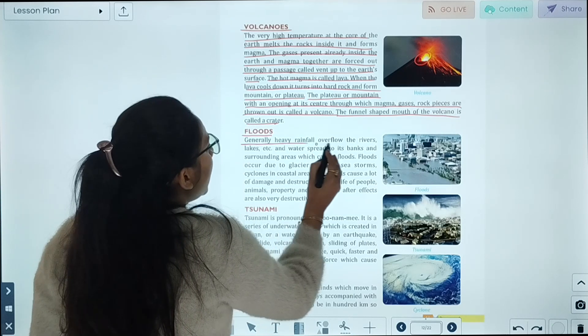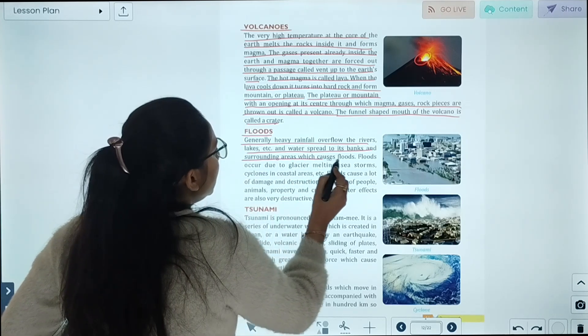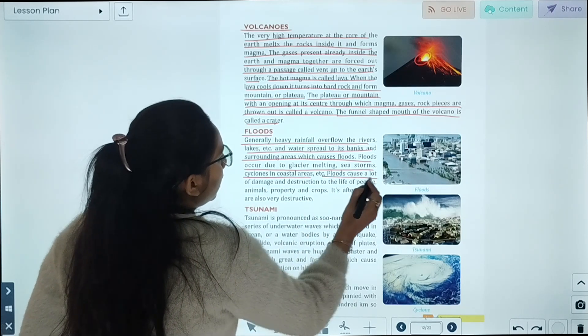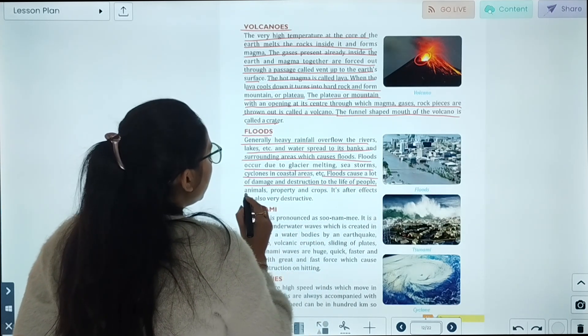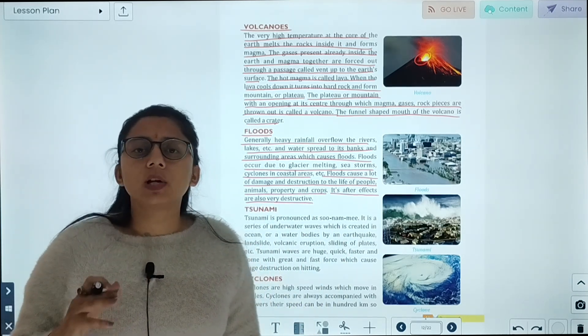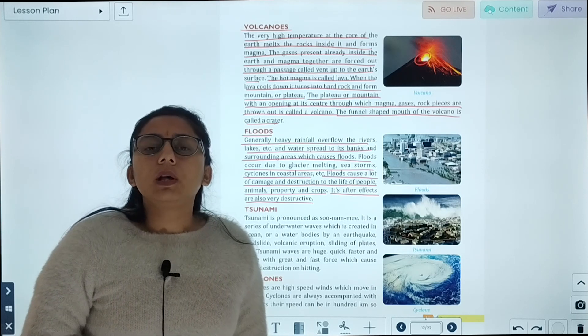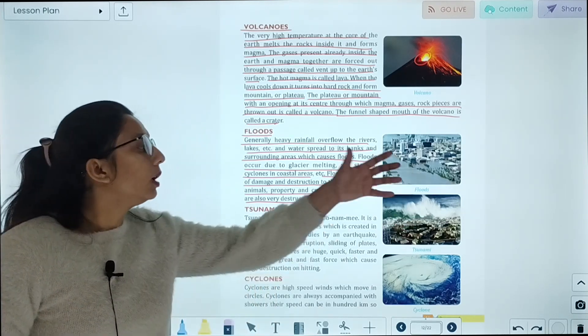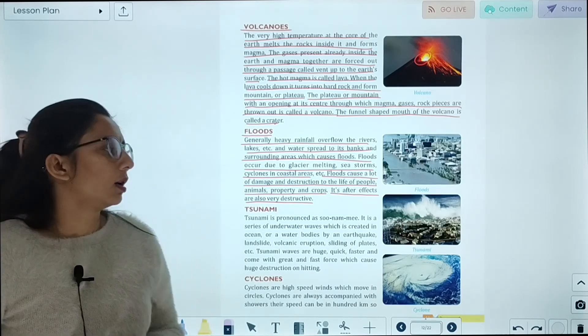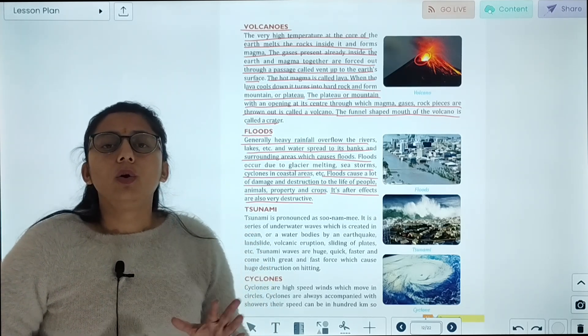Floods. Generally heavy rainfall overflows the rivers, lakes, and water spreads to its banks in the surrounding area, which causes floods. Floods occur due to glacier melting, sea storms, and cyclones in coastal areas. Floods cause a lot of damage and destruction to the life of people, animals, property, and crops. Water-borne diseases spread. It causes a lot of destruction.